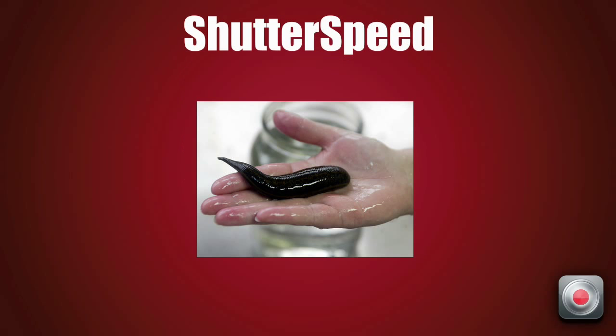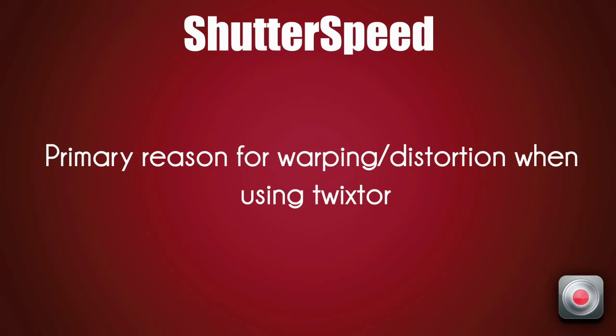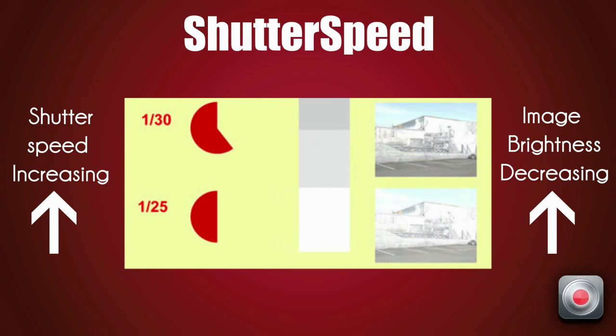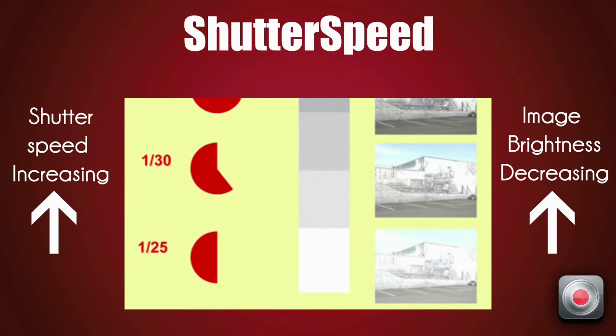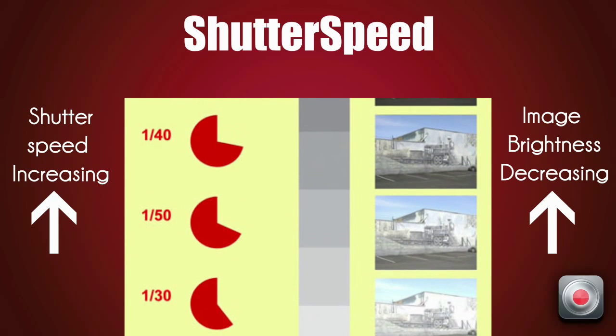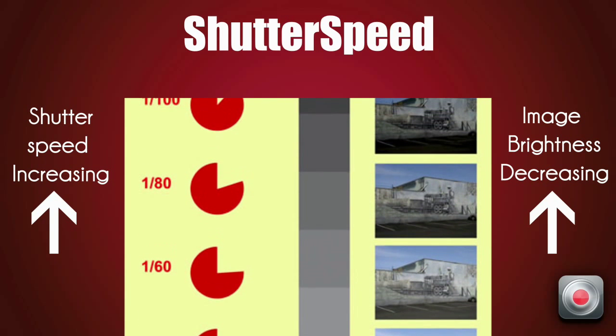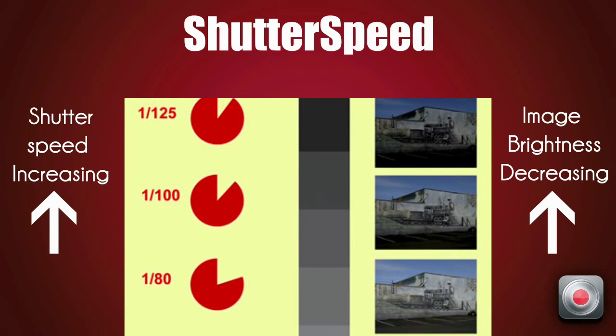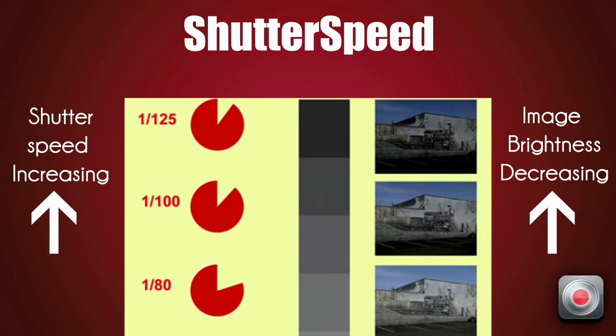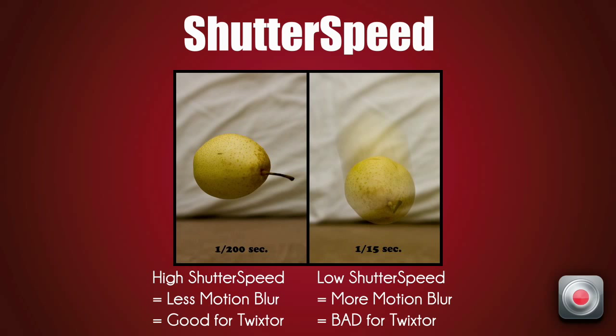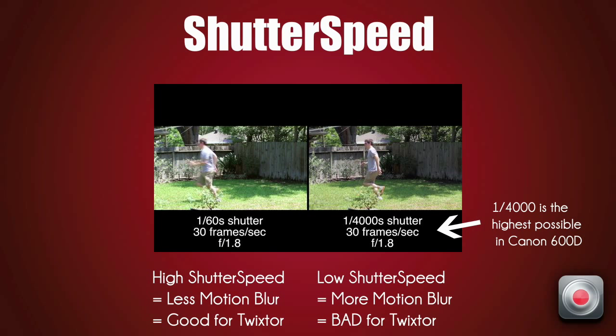Shutter speed — now this is one big factor. This is the main responsible element for warping or no warping in your videos. Just like the blinking of an eye, the shutter opens and closes multiple times a second to capture motion. A low value like 1/60th of a second makes the scene brighter because more light comes in, but it also means a lot of motion blur — and motion blur is very bad for Twixtor. Crank the value as high as possible so the shutter opens and closes faster, capturing more motion data.